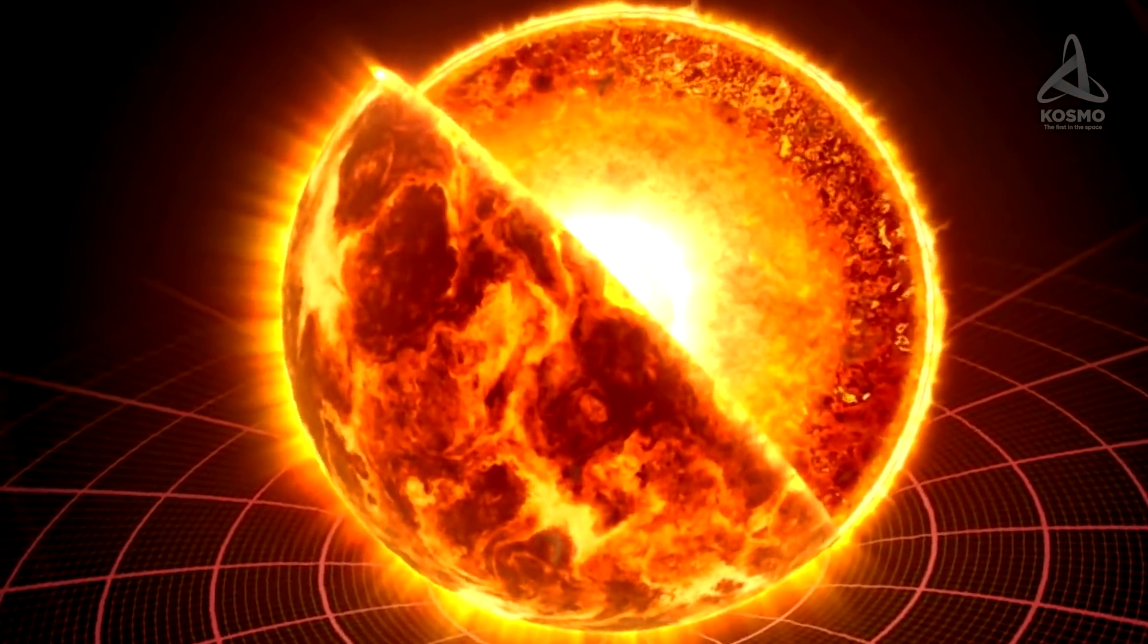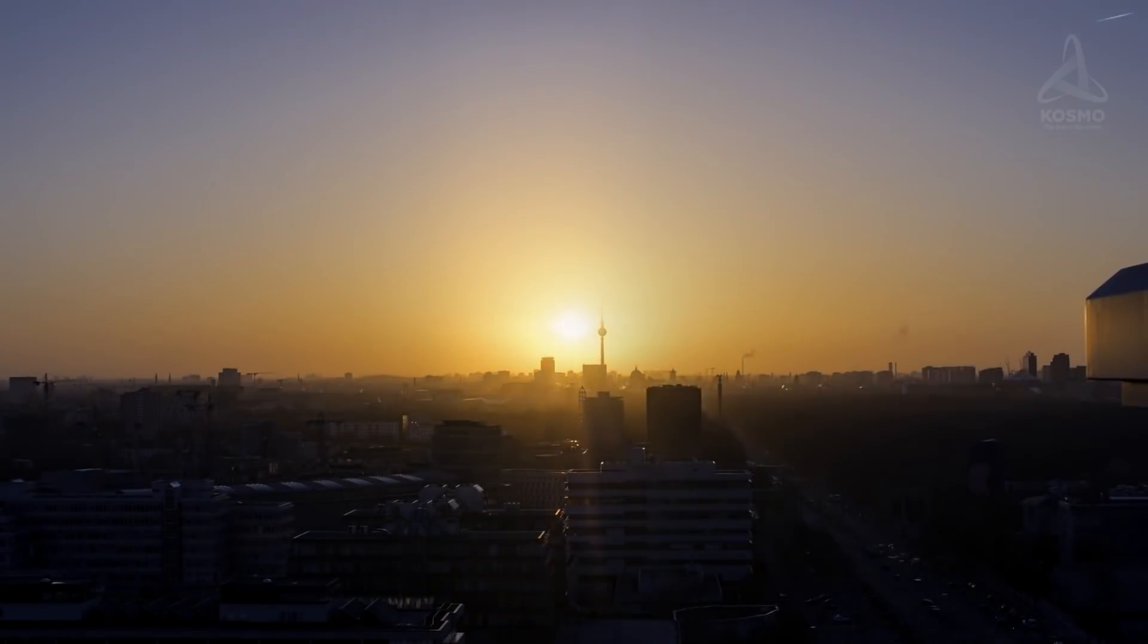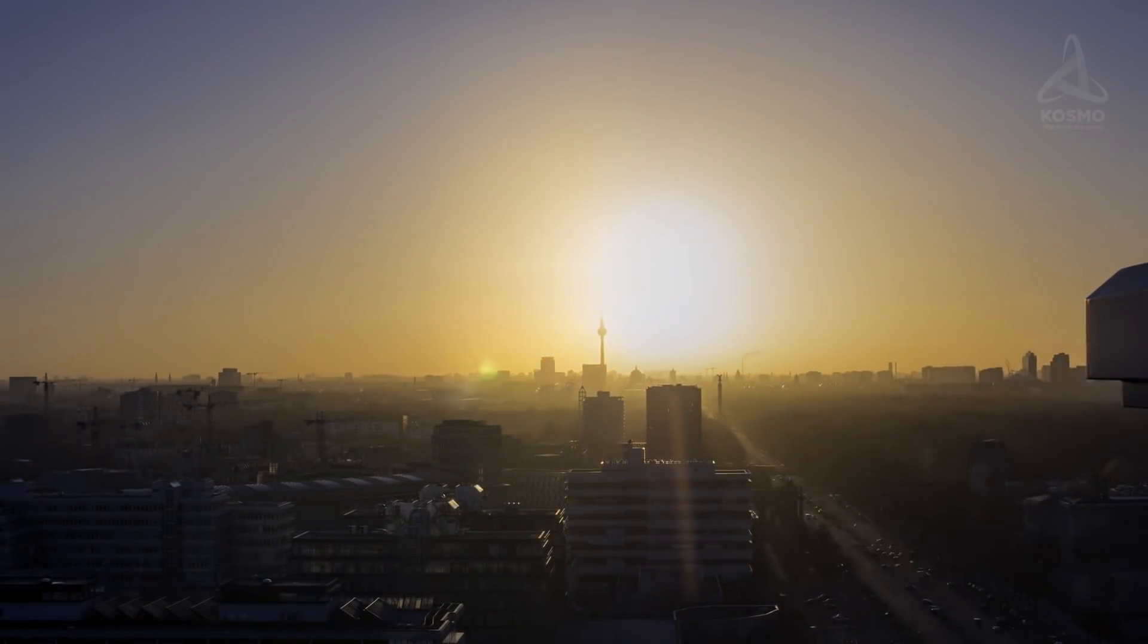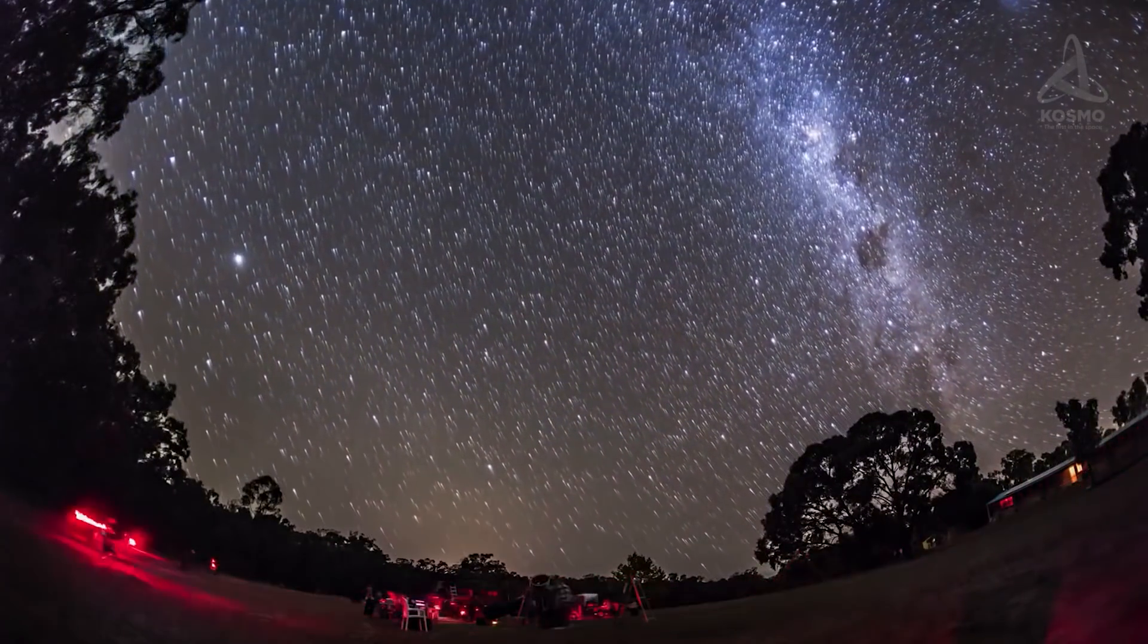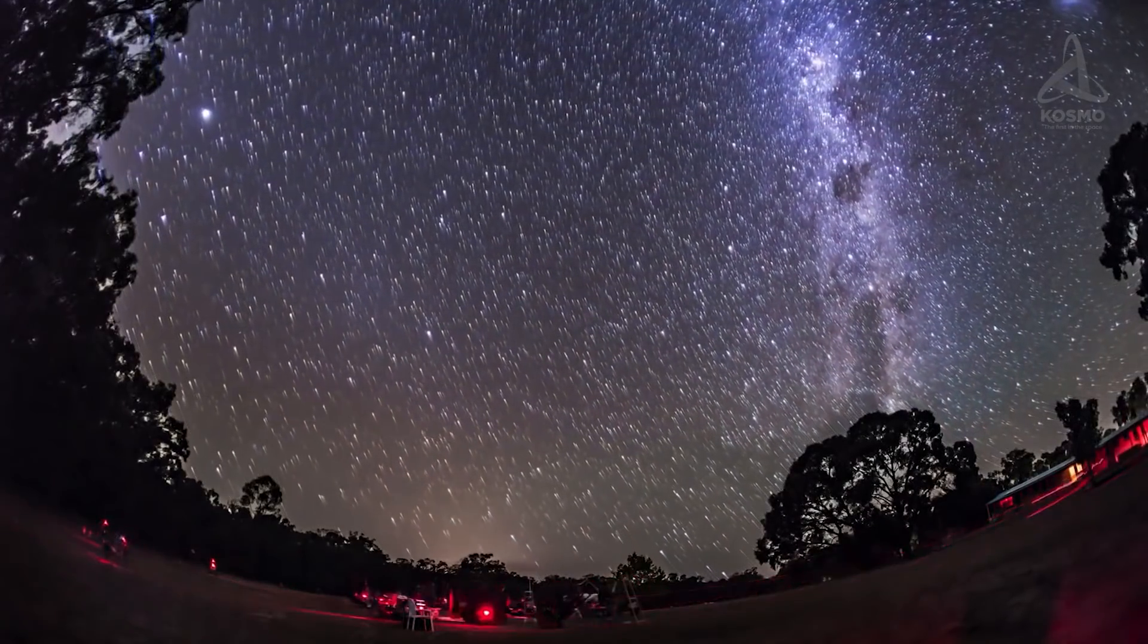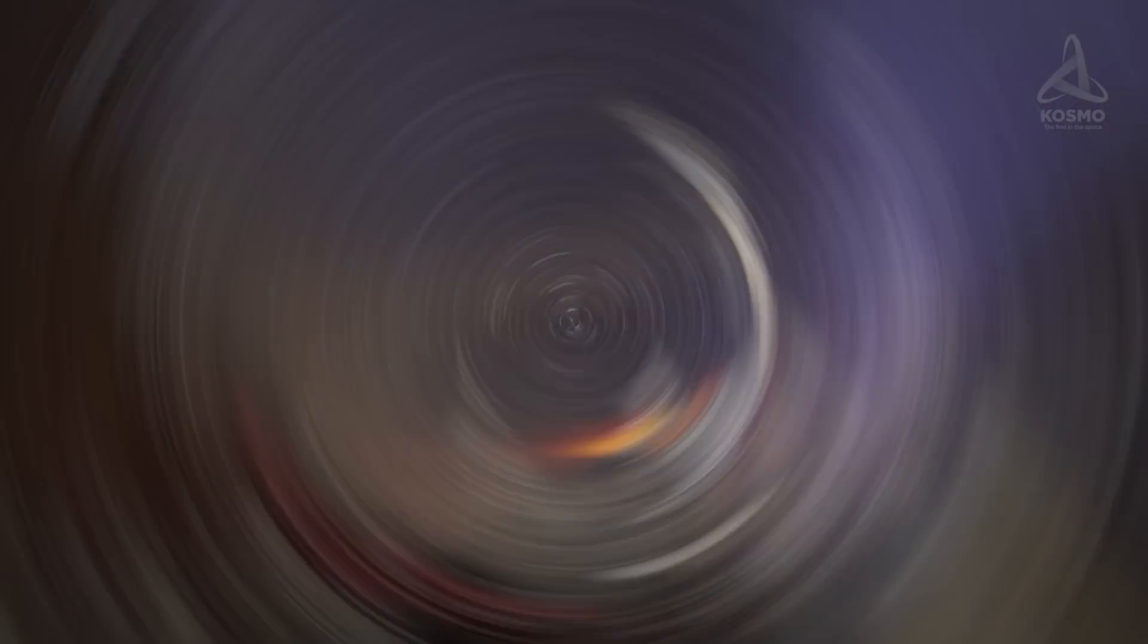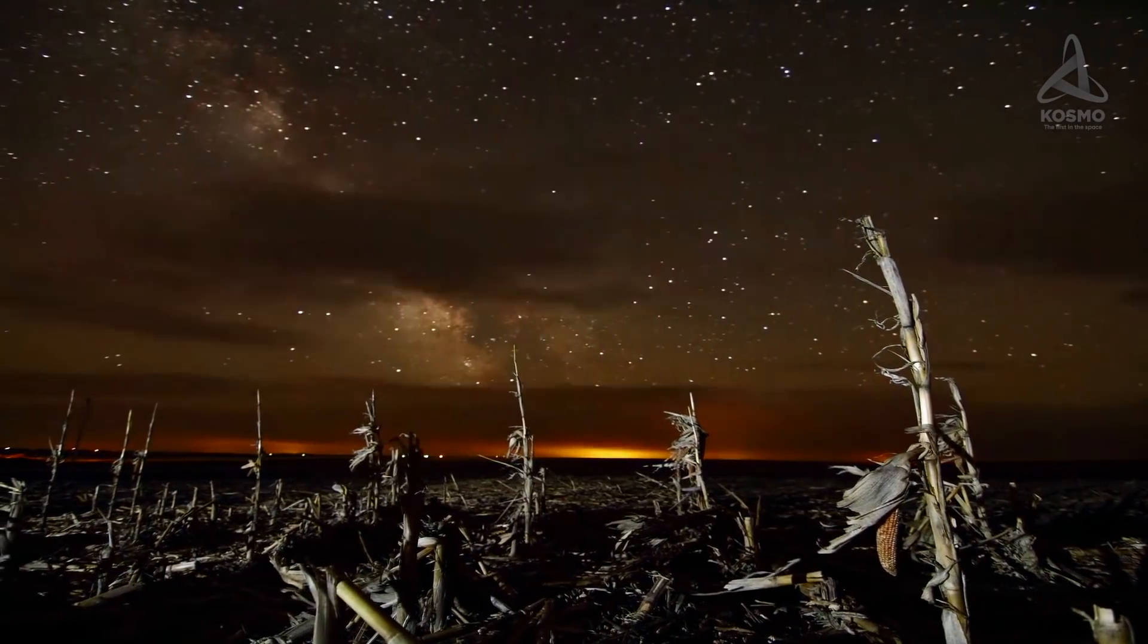The Sun, the basis of our system, is the closest star to the Earth. Unlike other stars, it is clearly visible in broad daylight. As for other celestial bodies in the infinite space, they can be seen in the nighttime. However, stars differ in terms of their real brightness.